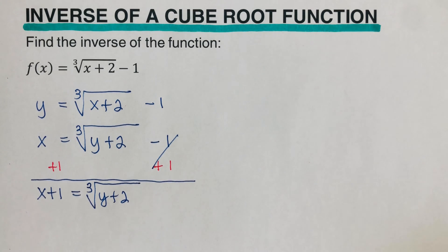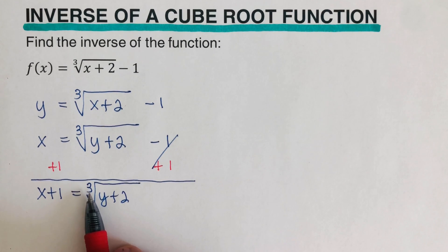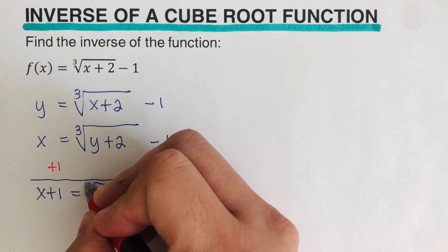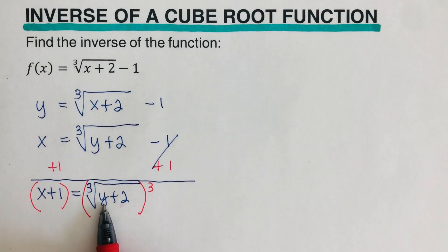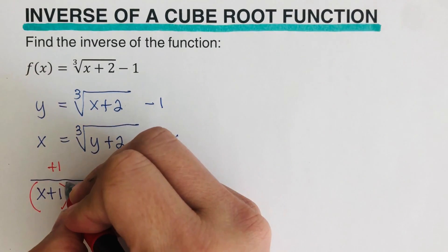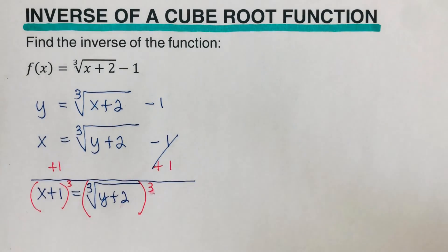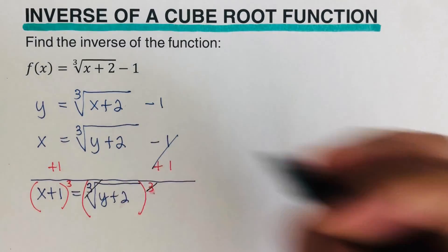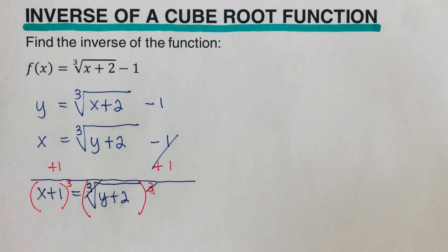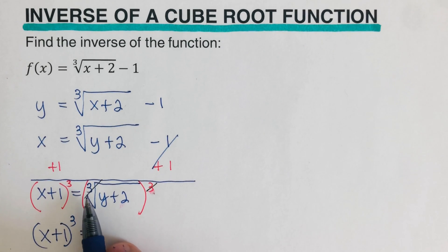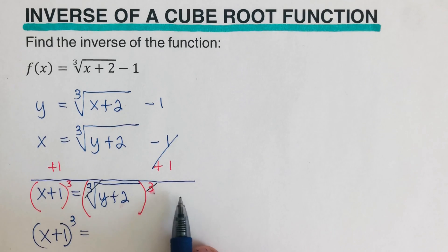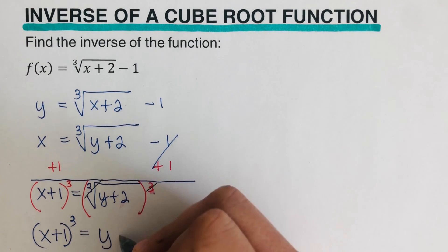Our target is to isolate y by itself. The antidote for cube root — in order to get rid of the cube root — is to cube both sides. So I am going to cube both sides. The cube root and the cubed cancel, so we are left with: x plus 1, cubed, is equal to y plus 2.